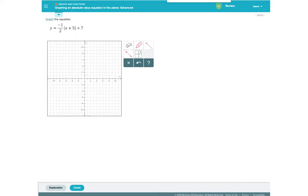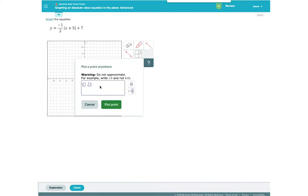To graph this absolute value equation, let's first plot the vertex and the two points we found using the feature that allows us to plot a point in Alex. We will begin with the vertex. Negative 5 for x and 7 for y and then press plot point.